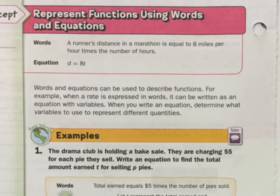Lesson four is all about representing functions using words and equations. It's going to take you through the process: you start with words, you get some variables, and then you can write your equation. Let's get right into the examples.